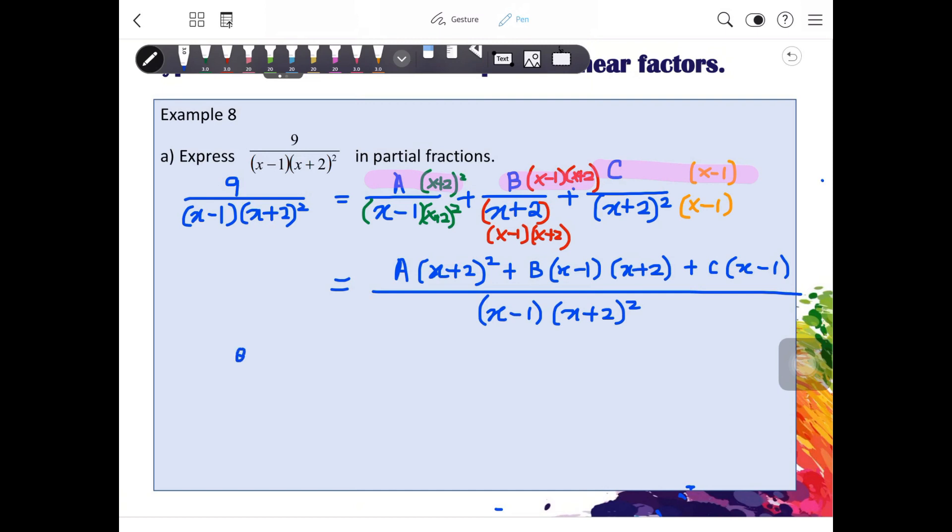So, be reminded that we only care to compare the numerator. So, A, x plus 2 squared plus B, x minus 1, x plus 2 and C, x minus 1. So, when you are familiar enough, you can skip this step to this.